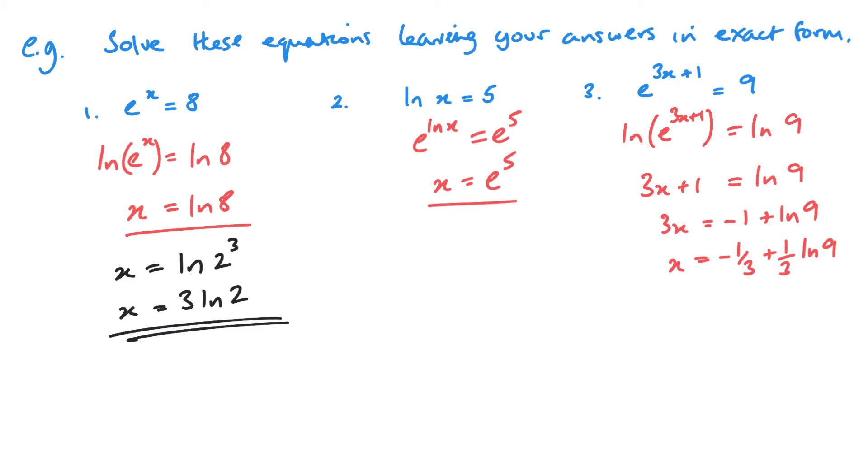Dividing by 3 minus 1 third plus 1 third ln 9. A couple of things worth pointing out about this one. When I take my plus 1 to the other side, I tend to leave it in front of my log. Because sometimes if you put it at the other side of the log, it looks like it could be part of it and it can lead to some confusion.